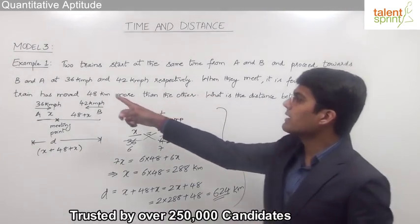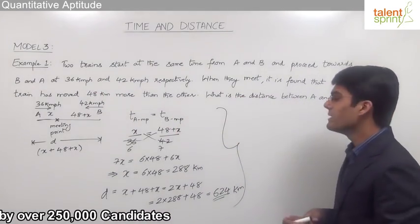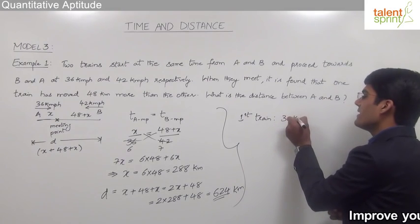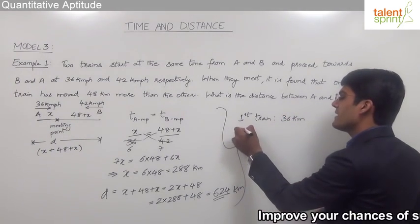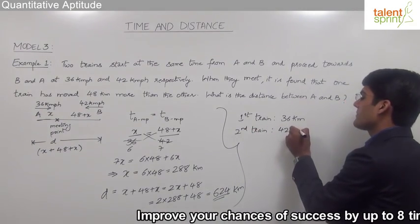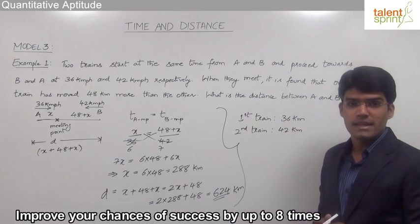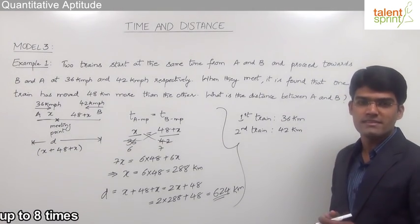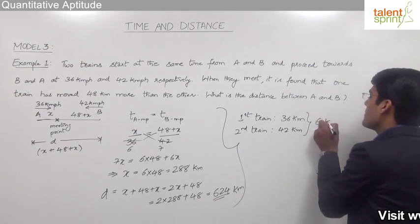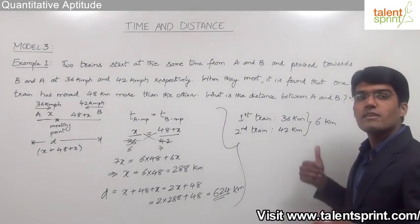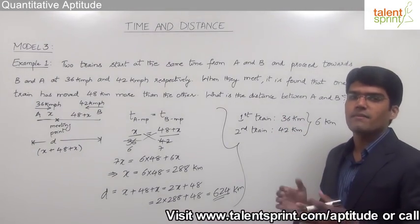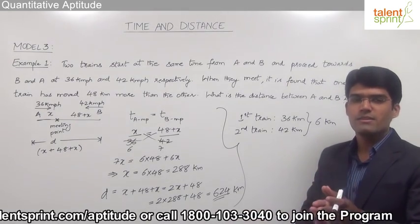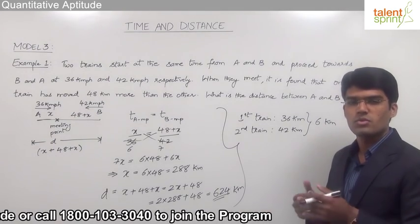The speeds of the two trains are 36 km per hour and 42 km per hour respectively. The first train covers 36 km in each hour, and the second train covers 42 km in each hour. Since both trains started at the same time, the difference in distances covered by the two trains in one hour is 6 km. For every hour, the difference of the distances will be 6 km. If both trains travel for 2 hours, the total difference is 6 plus 6, that is 12 km.